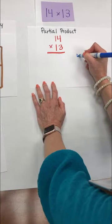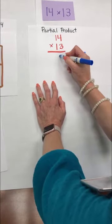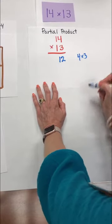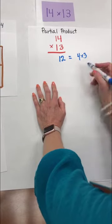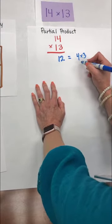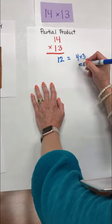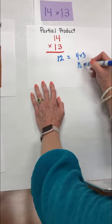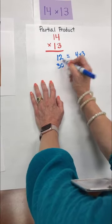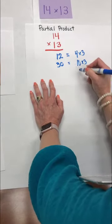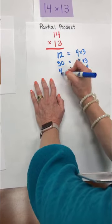We're going to show how 4 times 3 is going to equal our 12. Again our most important thing is to make sure that we're keeping our digits lined up so when students add they can do that efficiently. Our 3 times 10 or 10 times 3 excuse me is going to give us our 30. Our 10 times 4 is going to give us our 40.